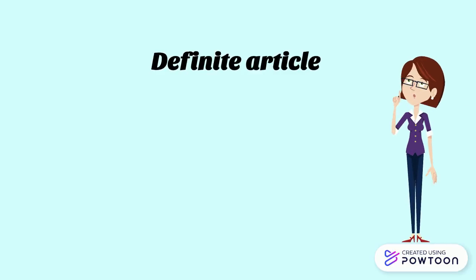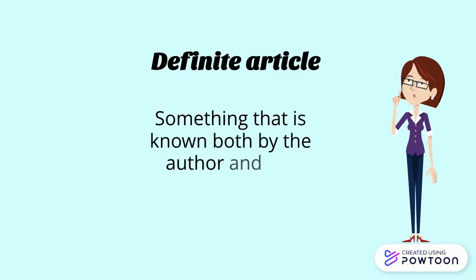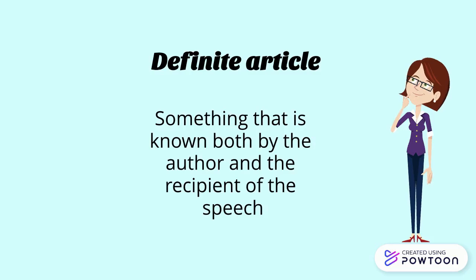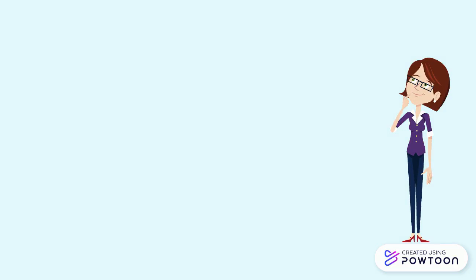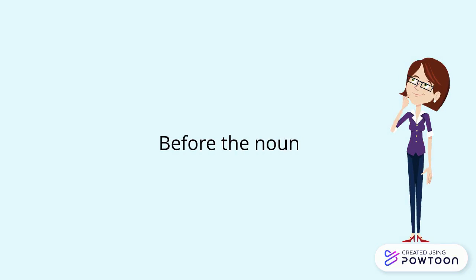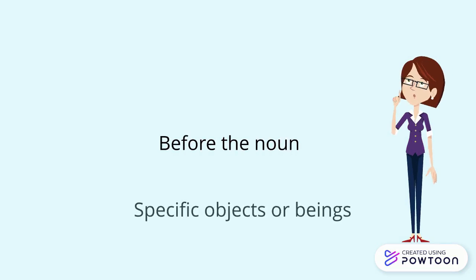A definite article refers to something that is known both by the author and the recipient of the speech. Definite articles are used before the noun when the objects or beings to which they refer are specific.